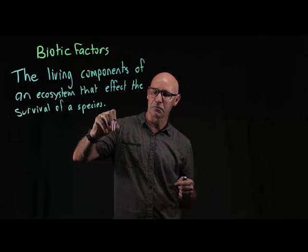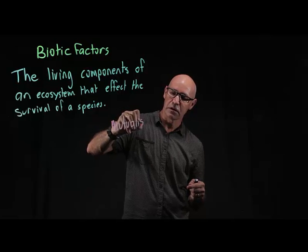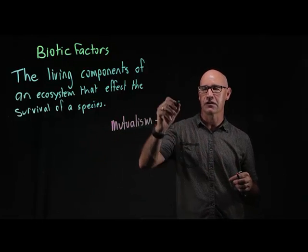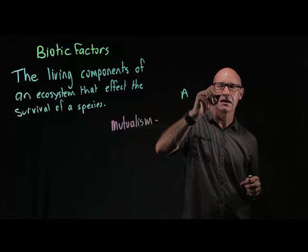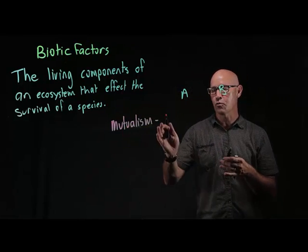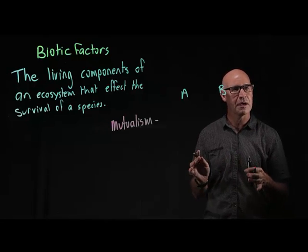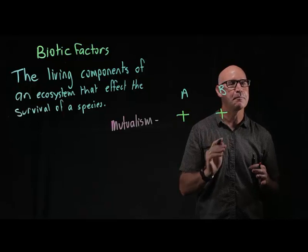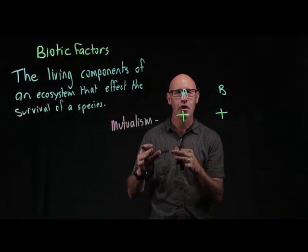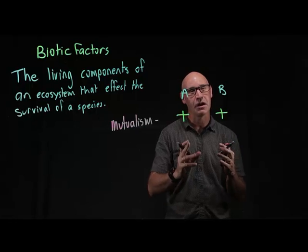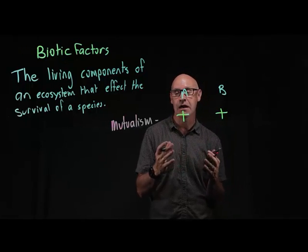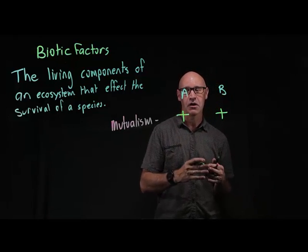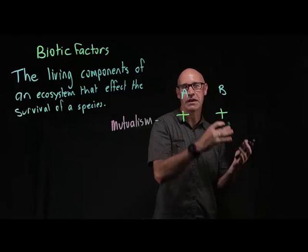The first one is mutualism. For each relationship we're going to consider species A and species B. With mutualism, the important thing is that both species benefit from the interaction. In fact, many times it's mandatory — one species can't survive without the interaction of the other.